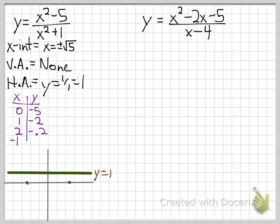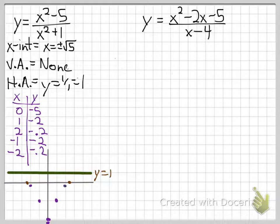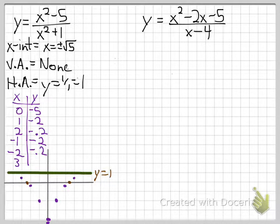For negative 1 and negative 2, squaring gives the same results: negative 2 and negative 0.2 respectively. Plotting these points shows the graph heading toward the intercepts. Trying x equals 3 gives (9 minus 5) over (9 plus 1), which is 4 tenths, or 0.4. Plotting that point, we can see the graph follows a sketch that hits the x-intercepts and approaches the horizontal asymptote y equals 1.